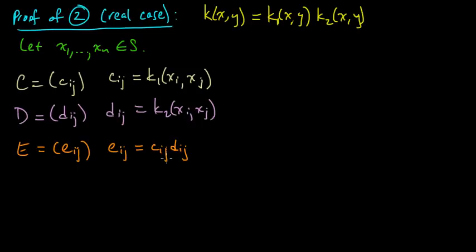And because k1 and k2 are symmetric, then C_ij equals C_ji, and likewise for D_ij and D_ji. And so this matrix is symmetric. So symmetry is easy. That's no problem at all.